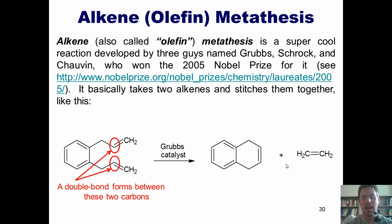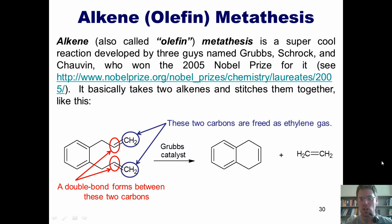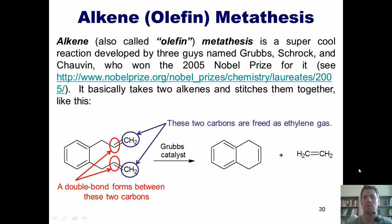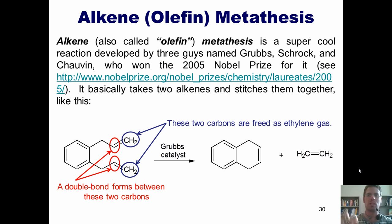Now, you might ask, what happens to these two other alkene carbons? Well, these two other alkene carbons are freed as ethane gas, this molecule here. This molecule, ethane, is also commonly called ethylene. This is what olefin metathesis is and does, and it's an extremely cool and useful reaction.